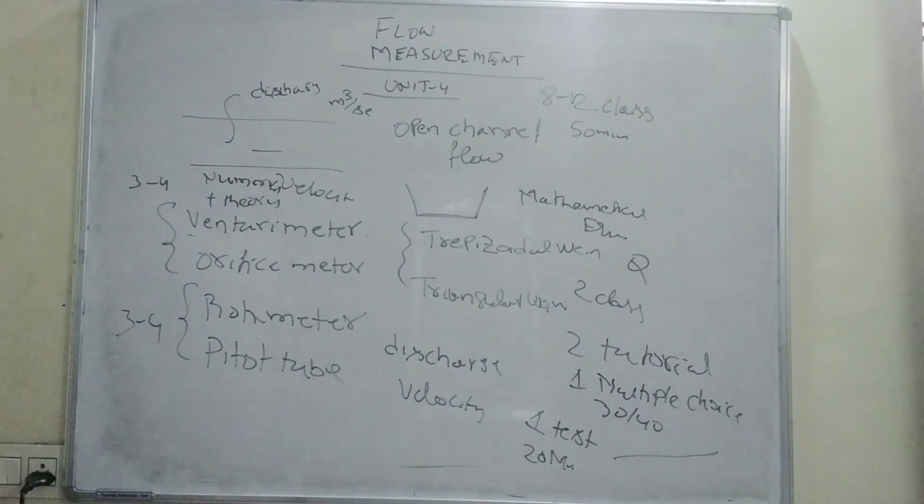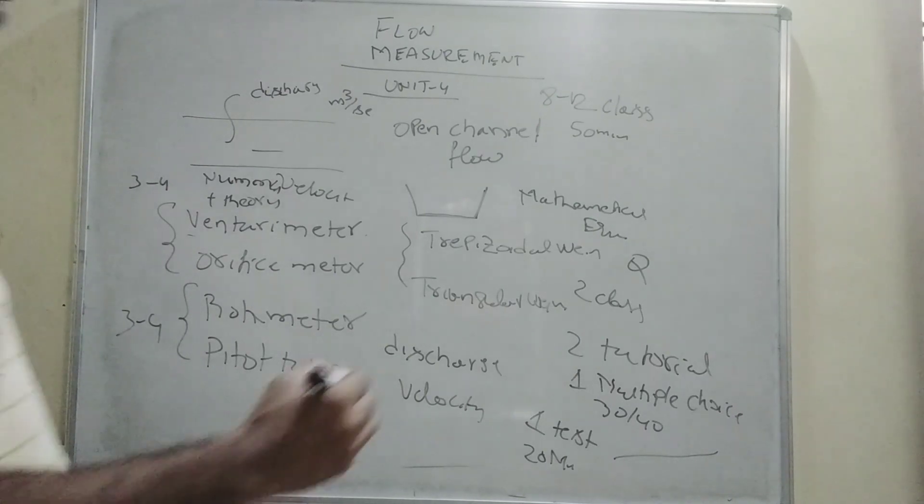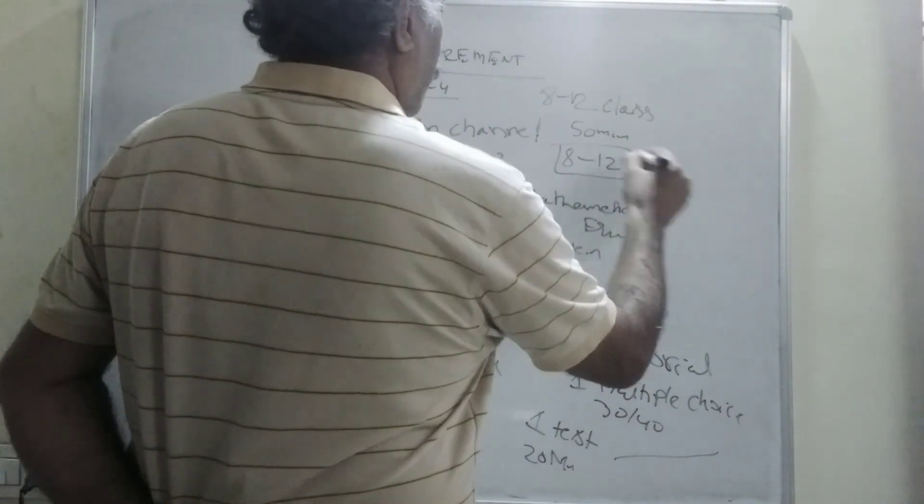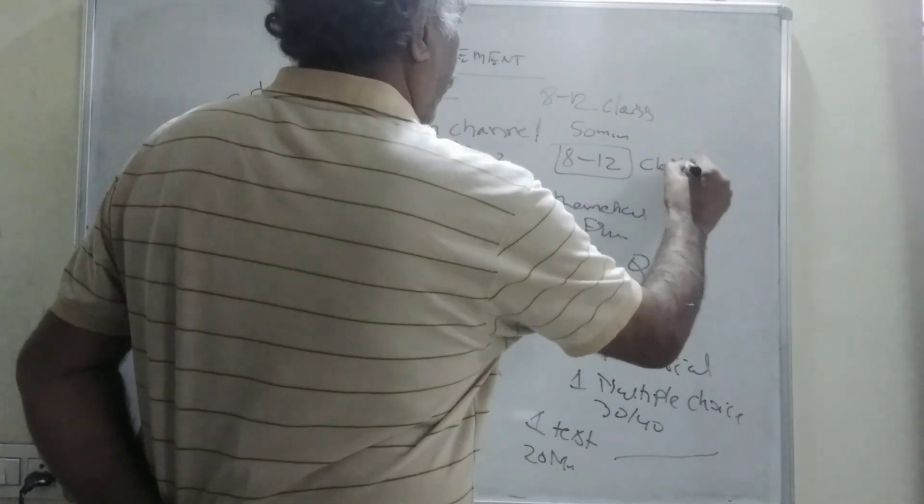So, this is how you can plan flow measurement week number 4. And it requires, you can take 8 to 12 classes, depending upon the weather, and each class is 15 minutes.